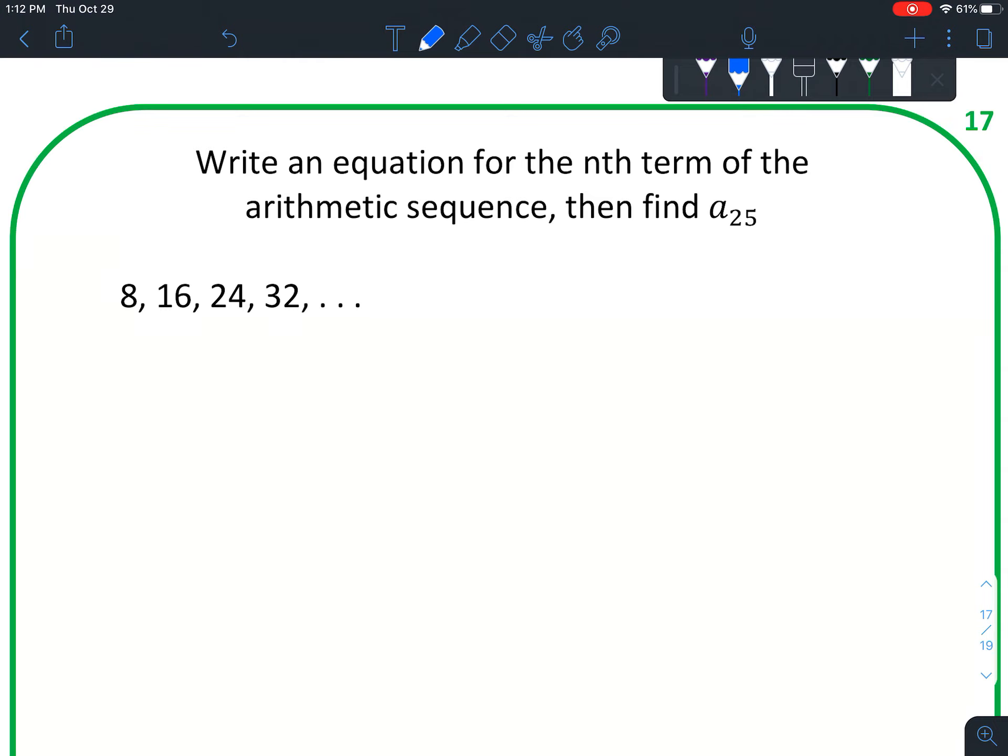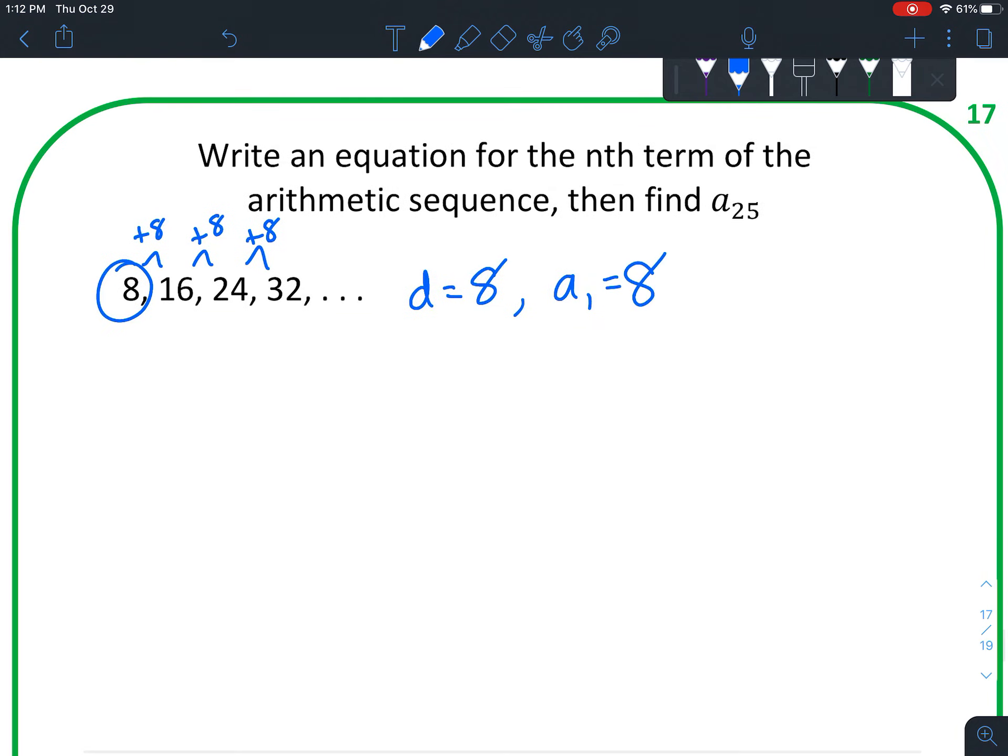Next example. So remember the first thing you want to do is find a sub 1 and d. So d equals, looks like we are adding 8. Just double check a few times. Yep, that holds true. We're adding 8 every time. Since we're adding, it's going to be positive. And then a sub 1 equals 8.